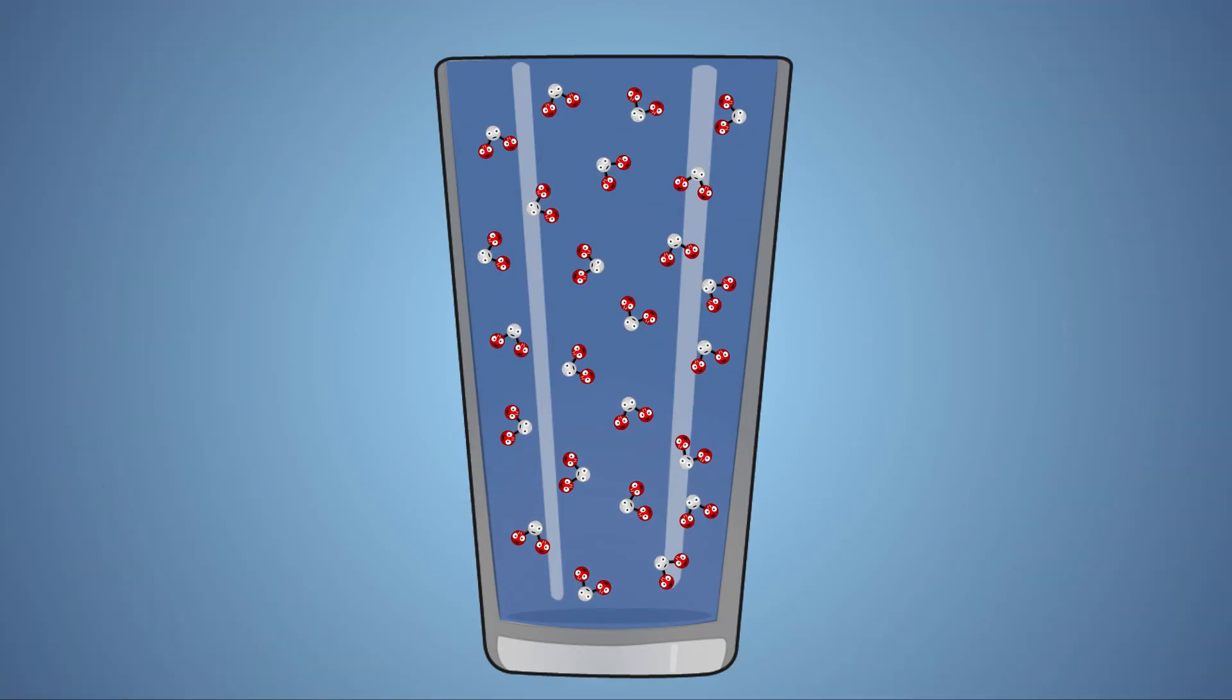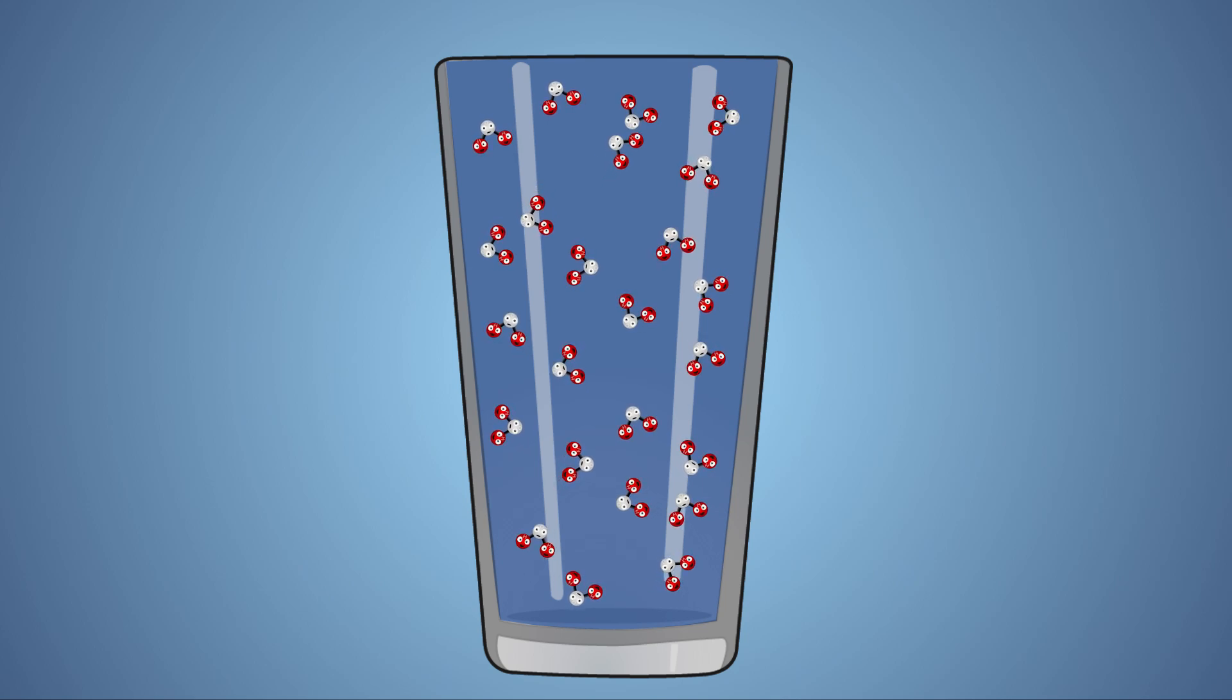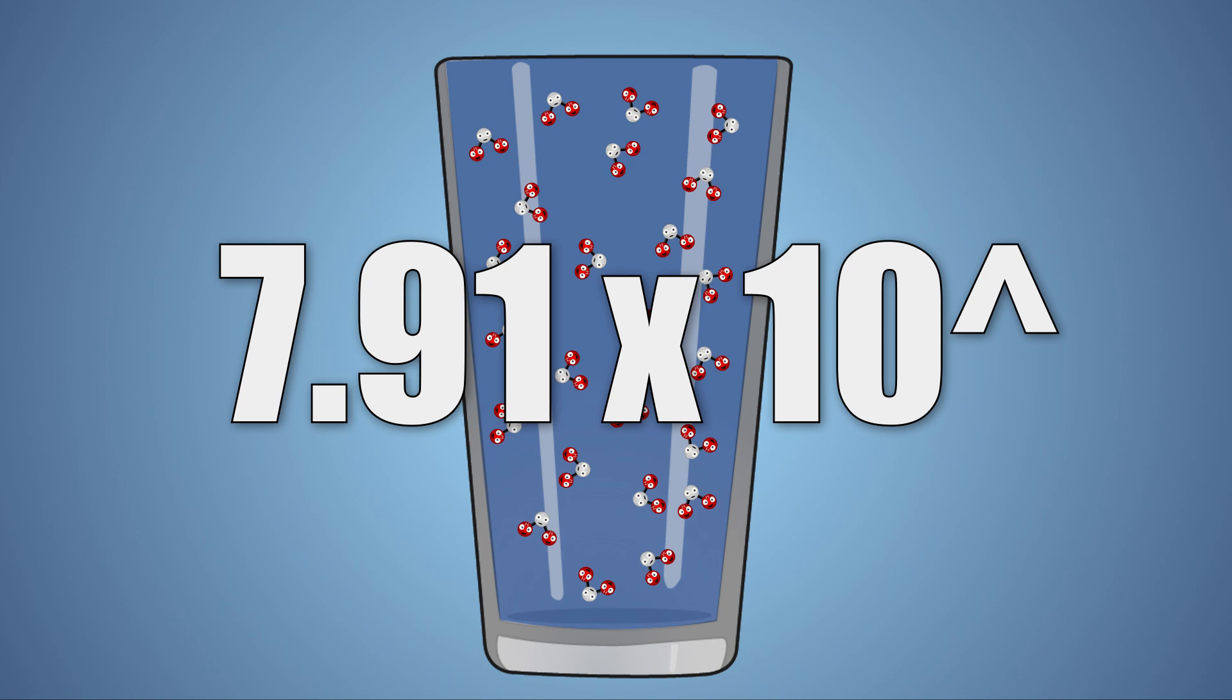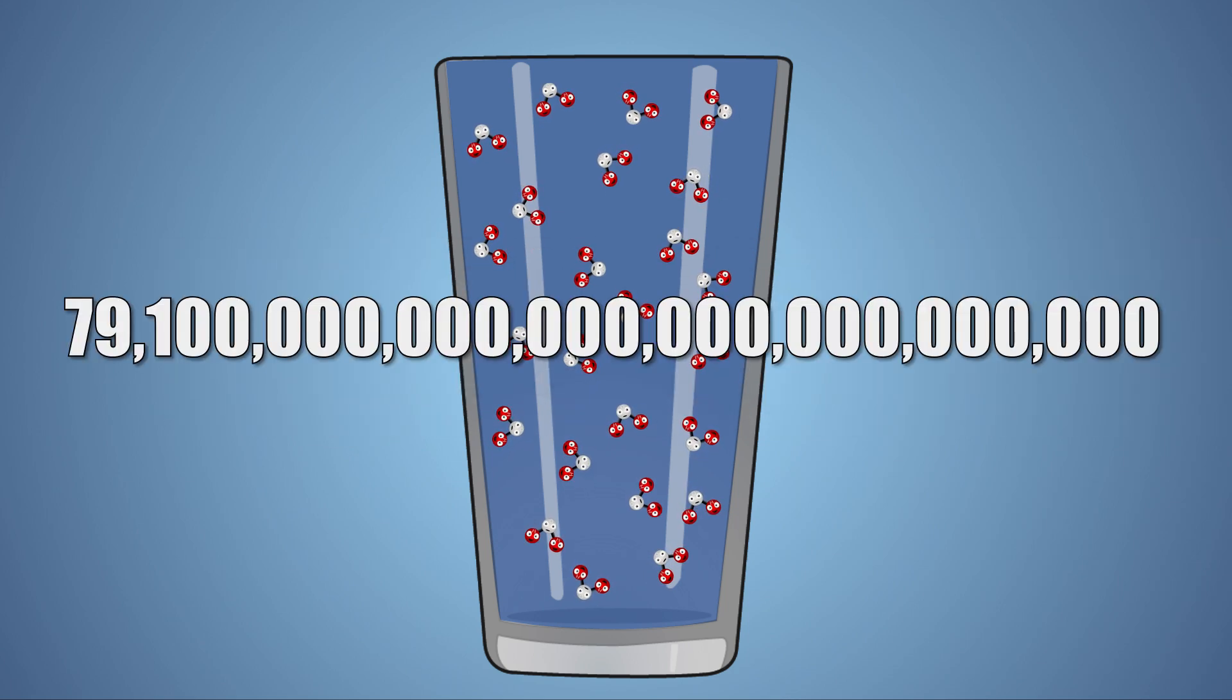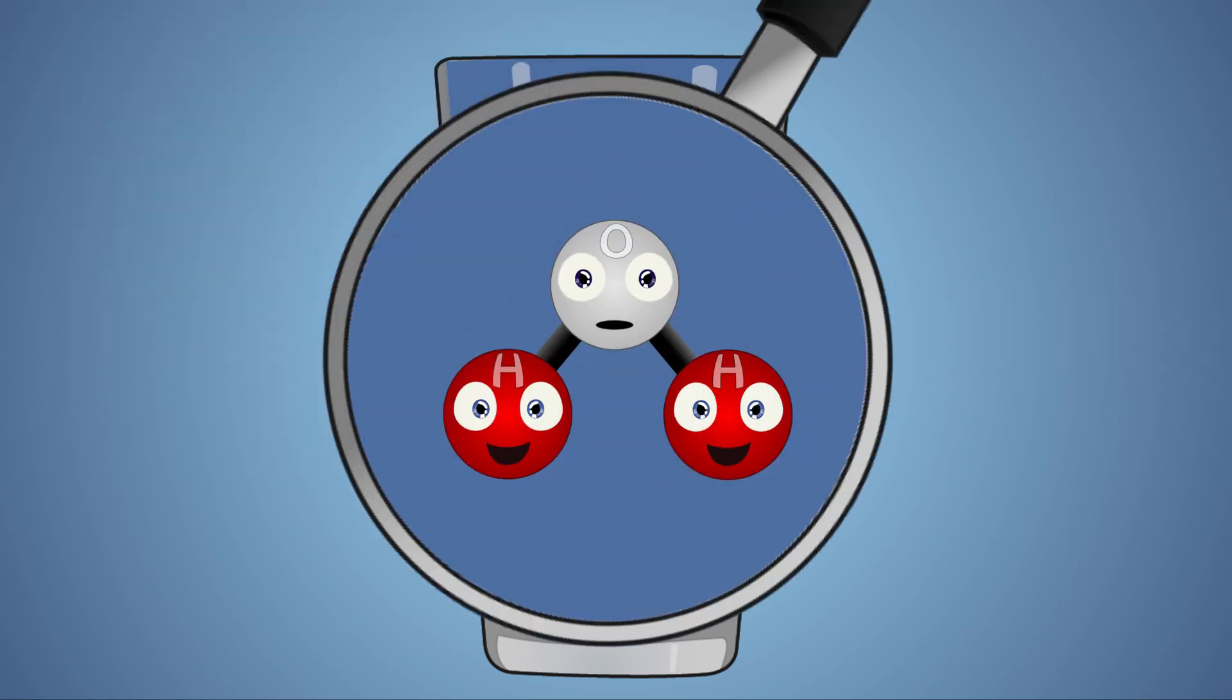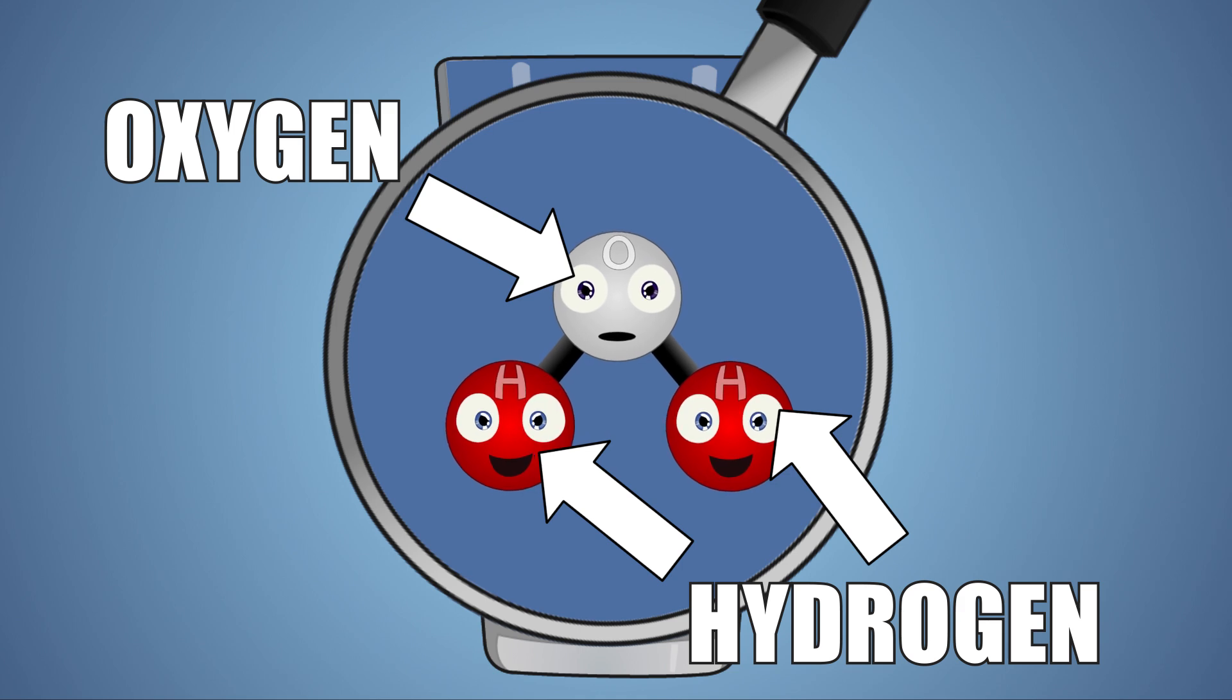Let's look at this experiment a little closer. Water is an amazing substance. One 8 ounce cup of water contains in the neighborhood of 7.91 times 10 to the power of 24 molecules of water, which is around this many molecules of H2O in every cup. This puts into perspective how very small water molecules are. Each water molecule is made up of one oxygen atom and two hydrogen atoms in a V shape.